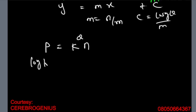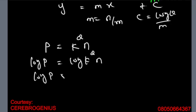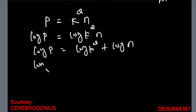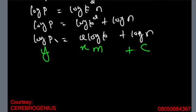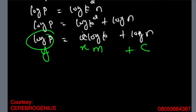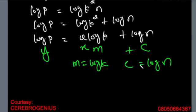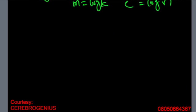What if you have p = k^q · n? You say log p = log(k^q) + log n, which becomes log p = q log k + log n. Your variables are p and q. So this is your y, and q is your x, making it y = xm + c. That means you are plotting graph of log p against q — your q does not have a log. So don't say log p against log q; it is log p against q. Your slope is log k and your intercept is log n.